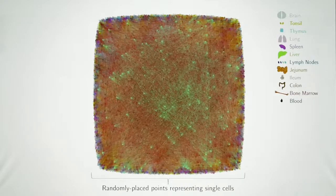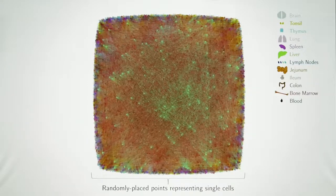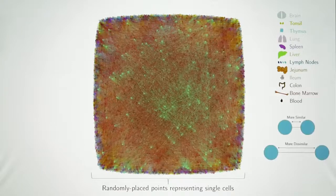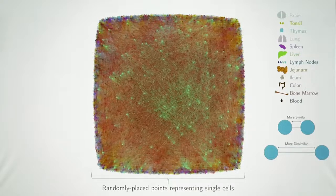And what we do next is we apply some complex math to instruct the cells to do something quite simple, which is just to organize themselves in space according to the similarities in their transcriptomes or their gene expression. So cells that are more similar are placed closer together, and cells that are more dissimilar are placed further apart.